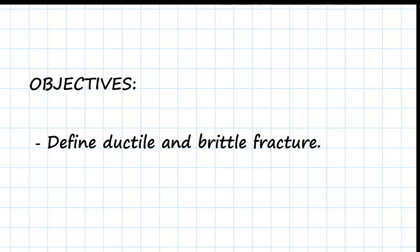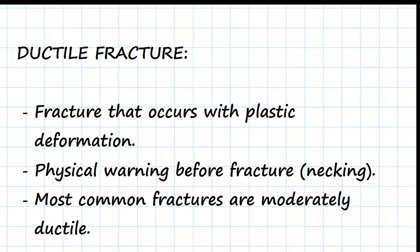The objectives of this video are to define ductile and brittle fracture. Ductile fracture is fracture that occurs with plastic deformation, so we see plastic deformation in the specimen before fracture occurs. This means that we have physical warnings before fracture.